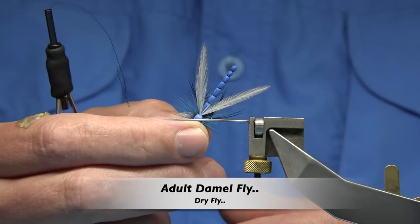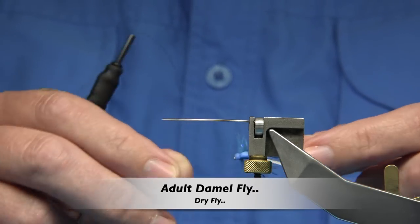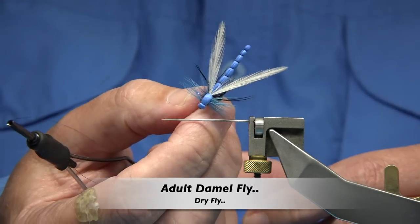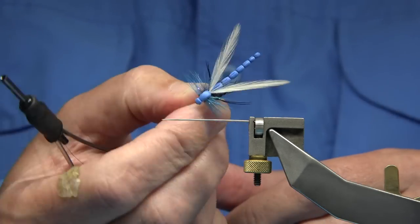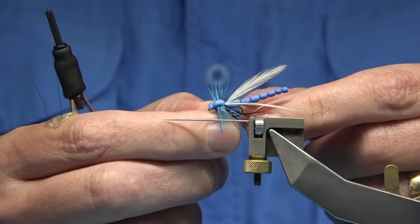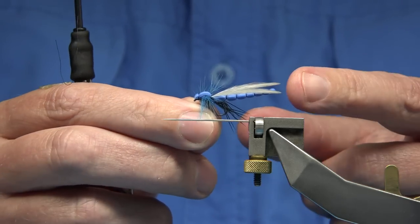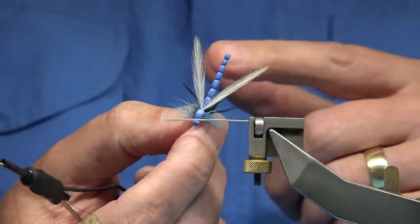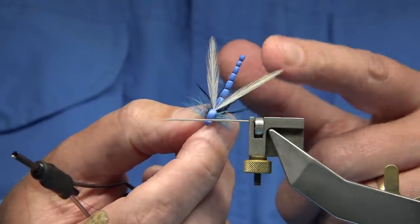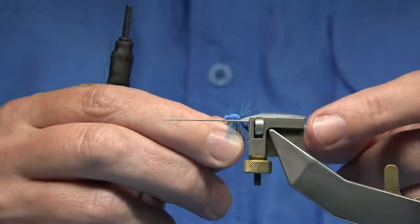I get many requests for flies and I have been asked quite a few times to tie a damsel fly, an adult damsel, not the olive damsel nymph, but the actual adult. You'll get a couple of colors, mainly blue. The one I see mainly is blue. Blue and red are the two main colors.